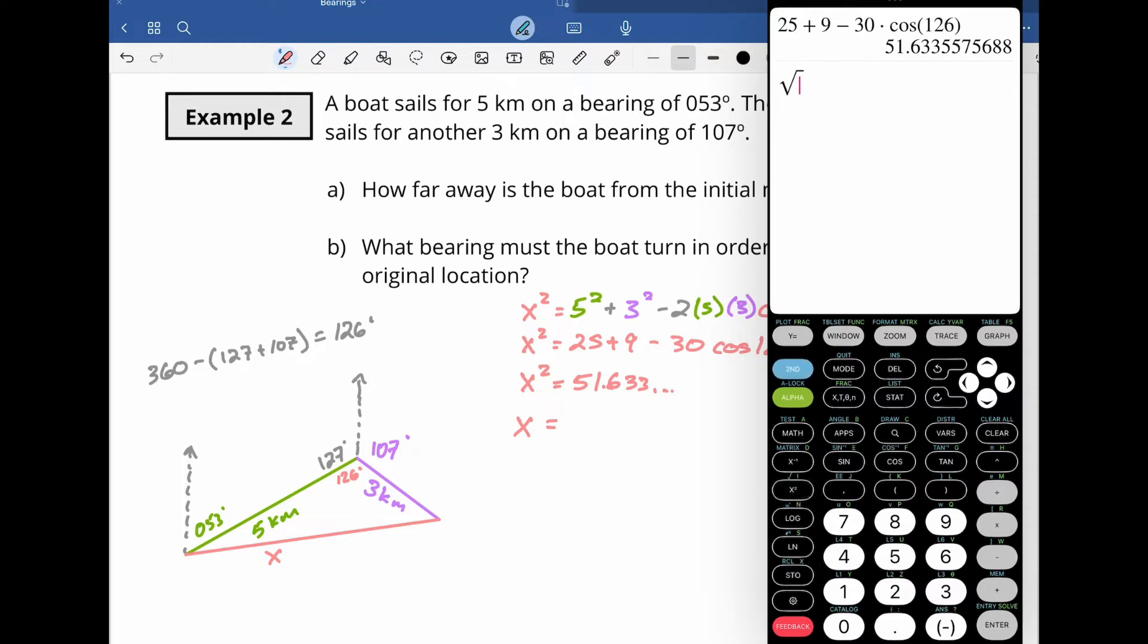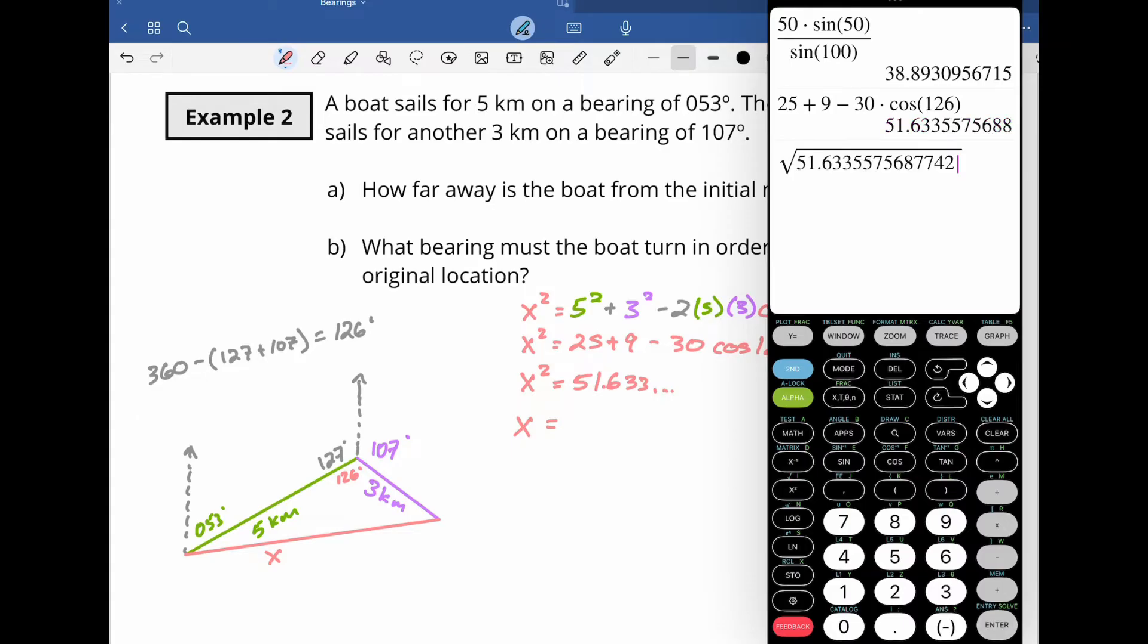That's going to give me the square root symbol. I'm going to hit the up arrow. I'm going to hit enter and that will bring in the full value down below. And then I get 7.1856 dot dot dot.